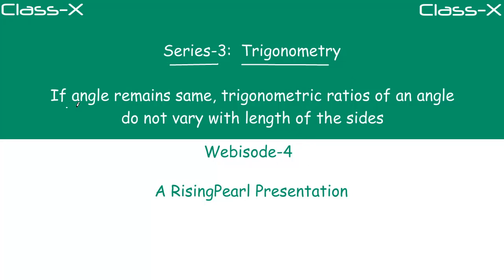Today's topic, friends, is: if the angle remains the same, the trigonometric ratios of the angle do not vary with the length of the sides. This is a really long topic because it's quite verbose, so let's understand it through some examples like we always do.